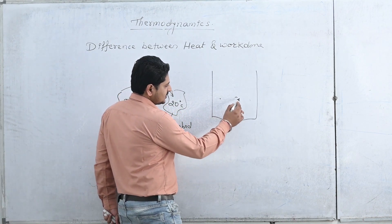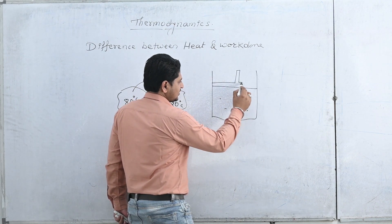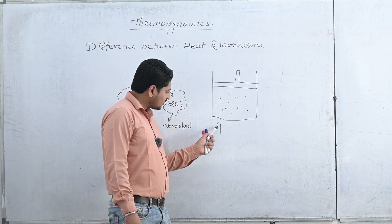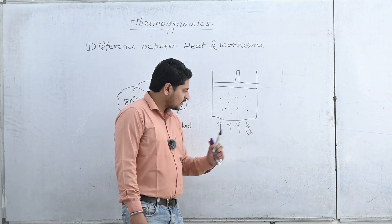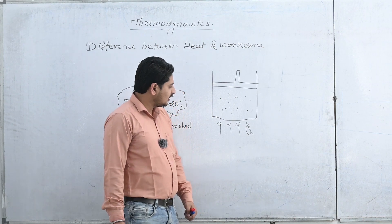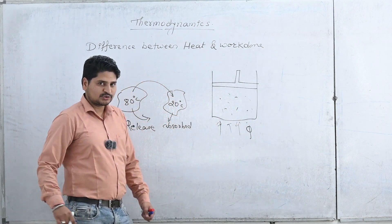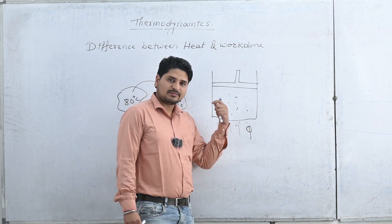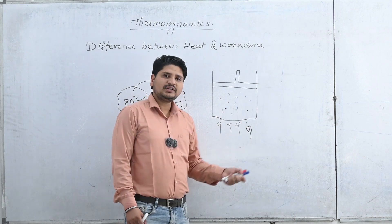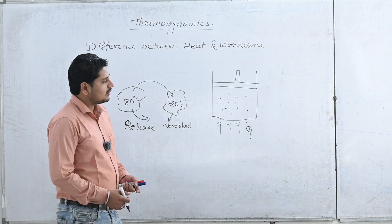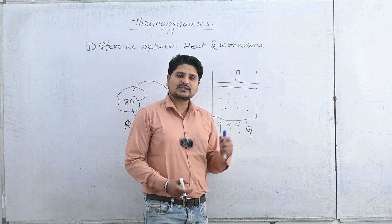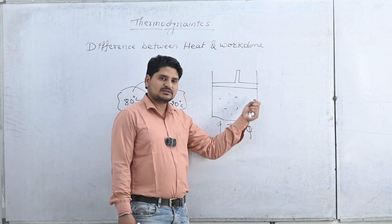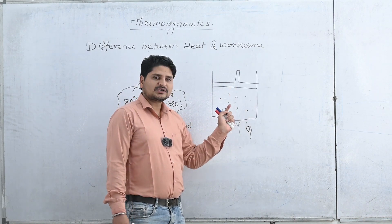Consider a container filled with gas and sealed with a piston. The gas molecules receive heat Q — the heat supplied. When the gas molecules absorb heat, their temperature increases, and the gas molecules start moving in random motion with constant collisions with each other.